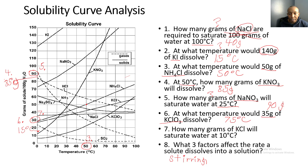Number seven: how many grams of KCl will saturate water at 10 degrees Celsius? We locate KCl and 10 degrees Celsius on the graph, bring it up until it hits the line, bring it over, and the answer is 30 grams.